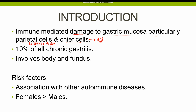Autoimmune gastritis constitutes almost 10% of all cases of chronic gastritis. Unlike H. pylori chronic gastritis, autoimmune gastritis only involves the body and fundus of the stomach, whereas it spares the antrum. The antrum is affected in H. pylori-associated chronic gastritis.